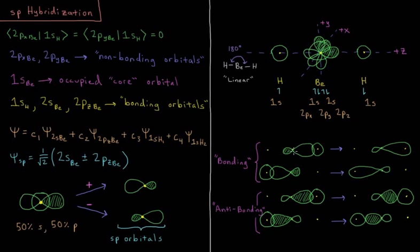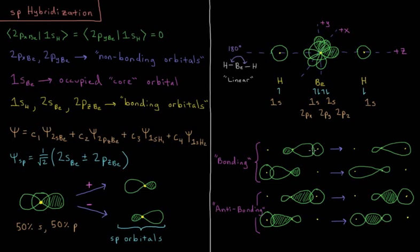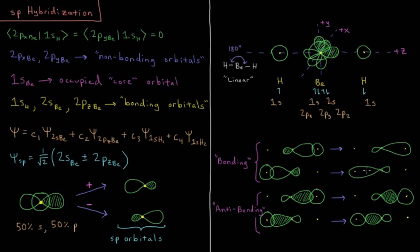So those sp orbitals, as I mentioned, can then overlap with the 1s orbitals of our external hydrogen atoms. So we have one on the right here, which can overlap there and form a bonding interaction. These orbitals are in the same phase. They overlap and interfere constructively. There's a buildup of electron density between the two nuclei, and that is what a chemical bond is. And similarly, we have the constructive overlap on the left of the other sp orbital with the other 1s hydrogen atom, forming a bond on the left.